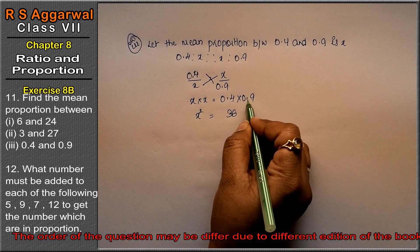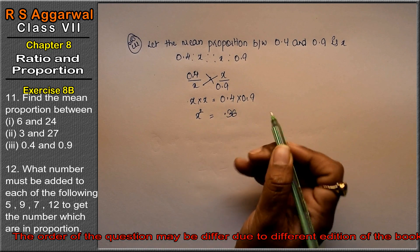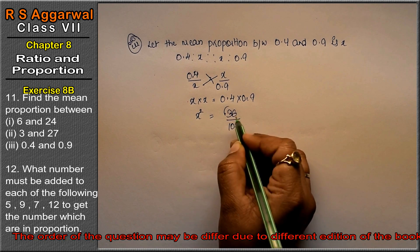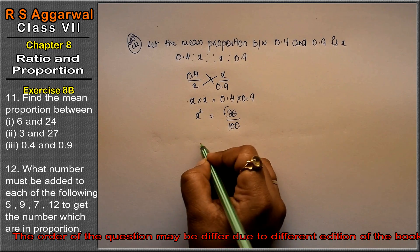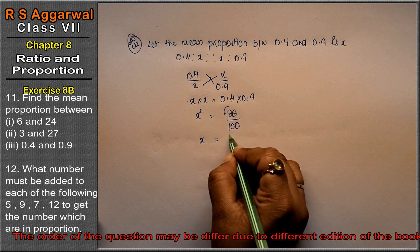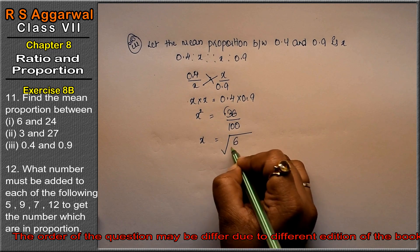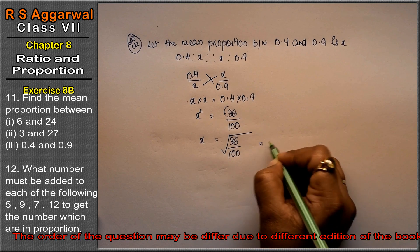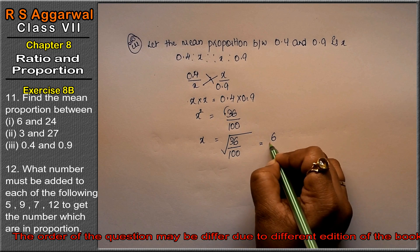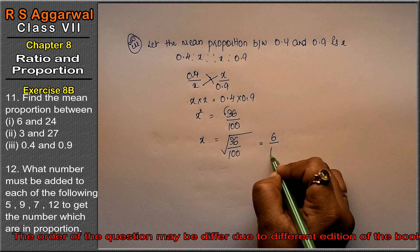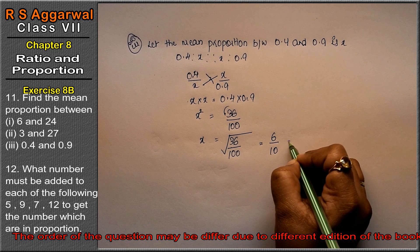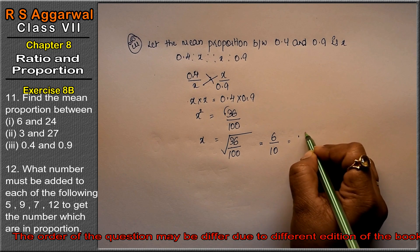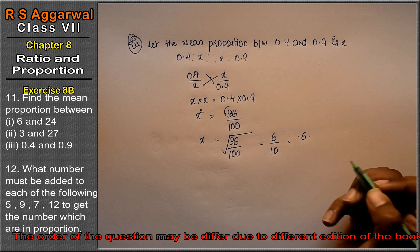Since there are 2 decimal places, we multiply by 100, giving x squared equals 36 upon 100. The square root of 36 is 6 and the square root of 100 is 10, so x equals 6 upon 10, which means x equals 0.6. So 0.6 is the answer.